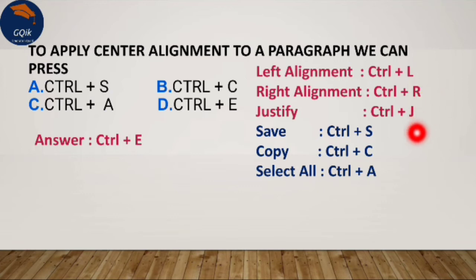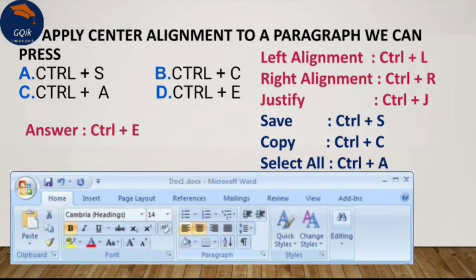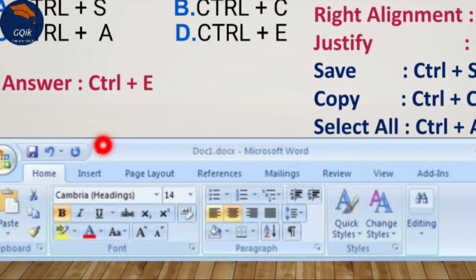Ctrl+C is the shortcut to copy content. Control+C copies content and stores it in the clipboard. The clipboard has a maximum capacity for stored content. If you want to select all contents in the whole document, you can use Ctrl+A to select all.